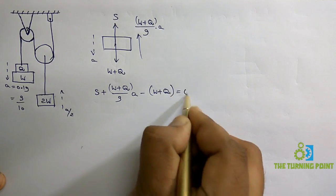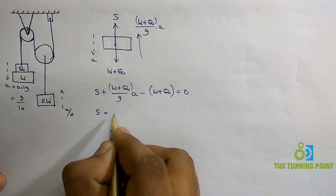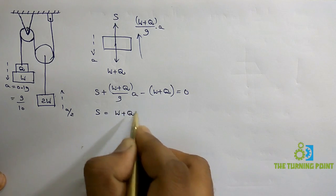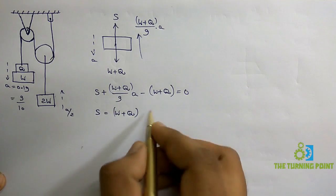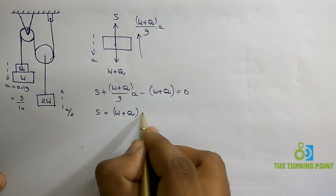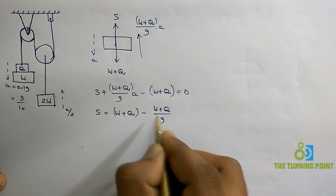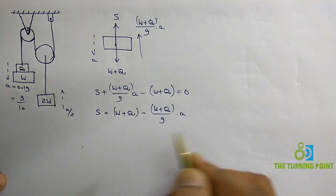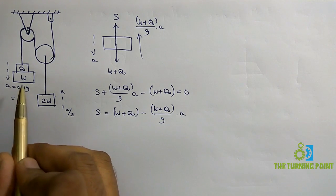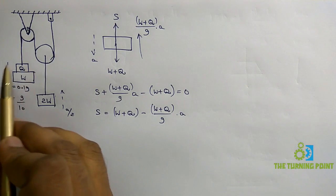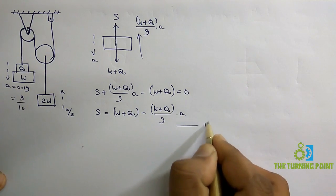Applying sigma Fy equal to 0: S acting in the positive y-direction plus (W+Q)/G times A also in the positive y-direction, minus (W+Q) equals 0. From that, S equals (W+Q) minus (W+Q)/G times A. This is equation 1.